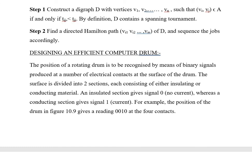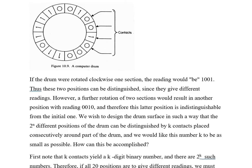For example, the position of the drum in the figure given below gives a reading 0010 at the four contacts. If the drum were rotated clockwise one section, the reading would be 1001. Thus these two positions can be distinguished since they give different readings. However, a further rotation of two sections would result in another position with reading 0010, and therefore this latter position is indistinguishable from the initial one.